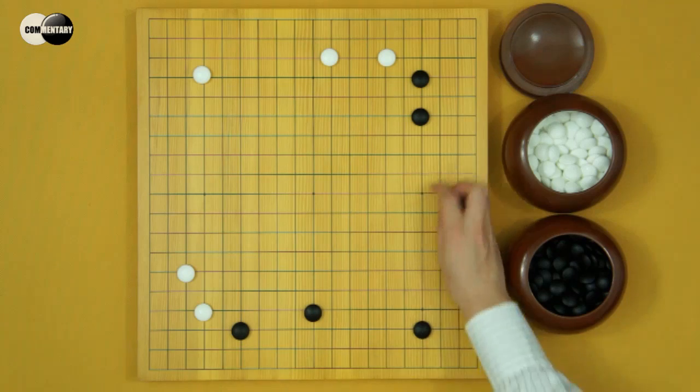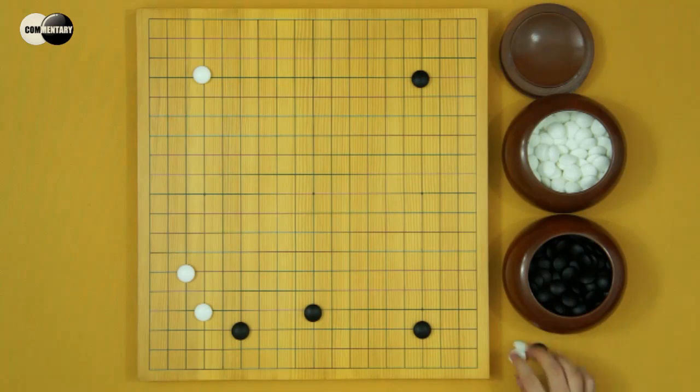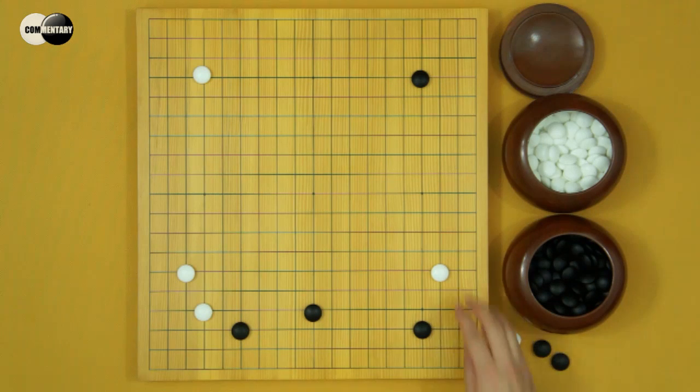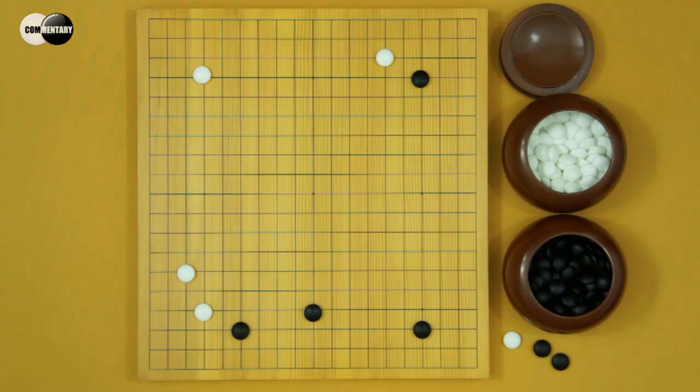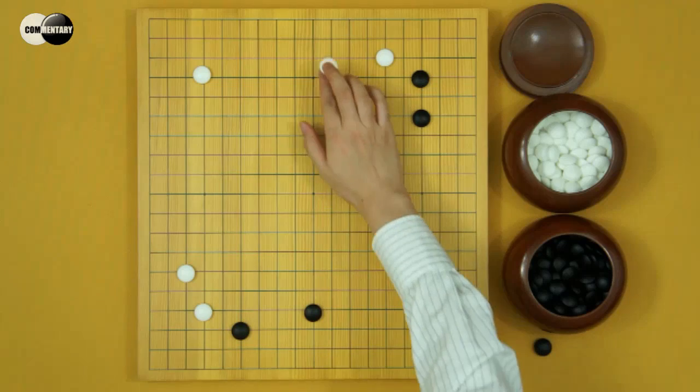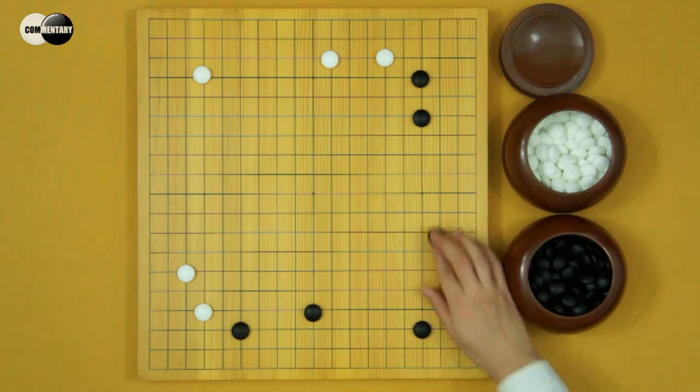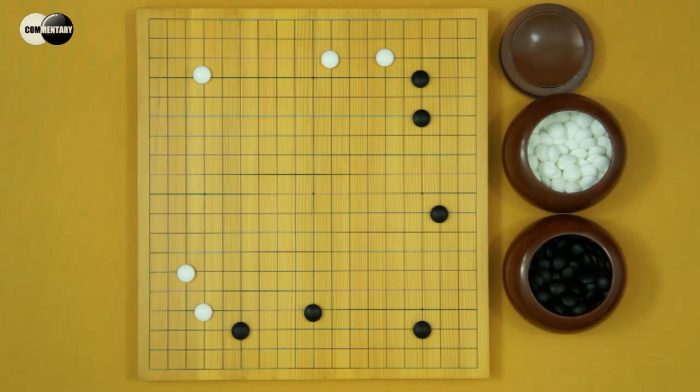It's equal to that. Black played a kobayashi fuseki. Of course, White still kakari is komoku. But now, White kakari is a star point. It's a bad move. Black jumps. White extends. Then Black extends to enlarge the moyo. It's a good point. So this result is bad for White. This is why nowadays White doesn't kakari the star point.